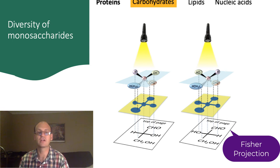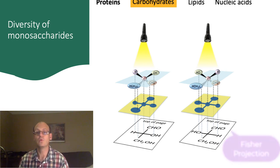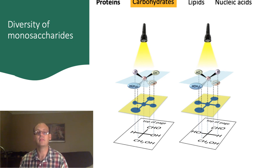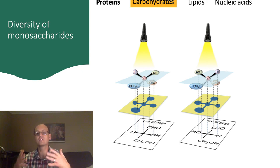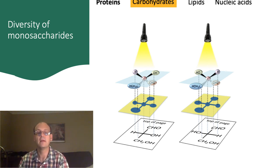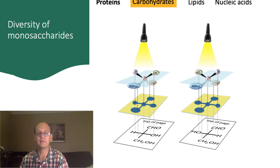With this projection, the orientation is always the same. With the carbonyl group at the top of the paper, the carbon atoms along the chain are where the lines cross, and the horizontal lines are always coming out of the paper towards you. In the example here, you can see that four groups are arranged differently around the chiral carbon atom.